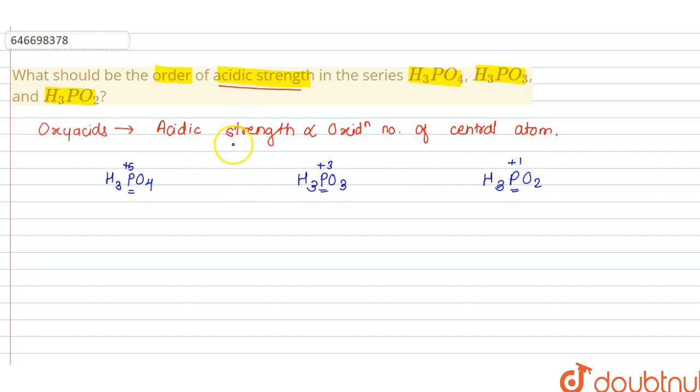Therefore, the expected order of acidic strength is H3PO4 greater than H3PO3 greater than H3PO2.